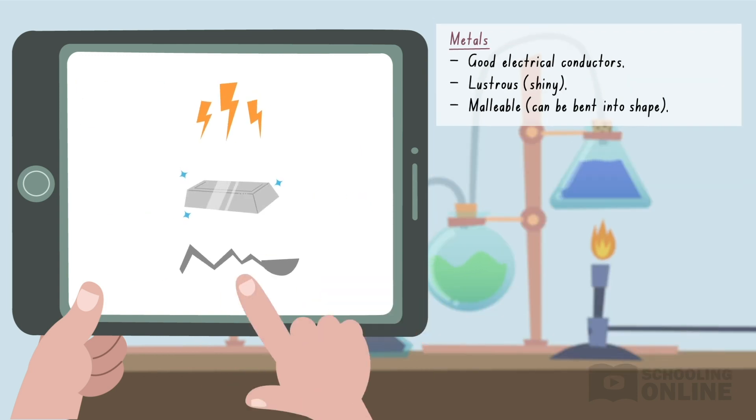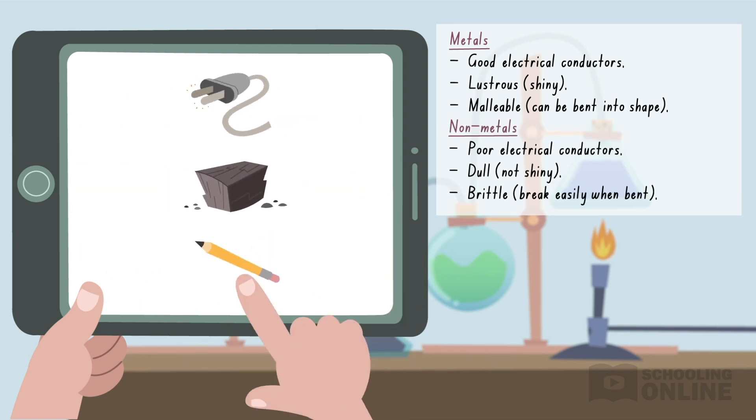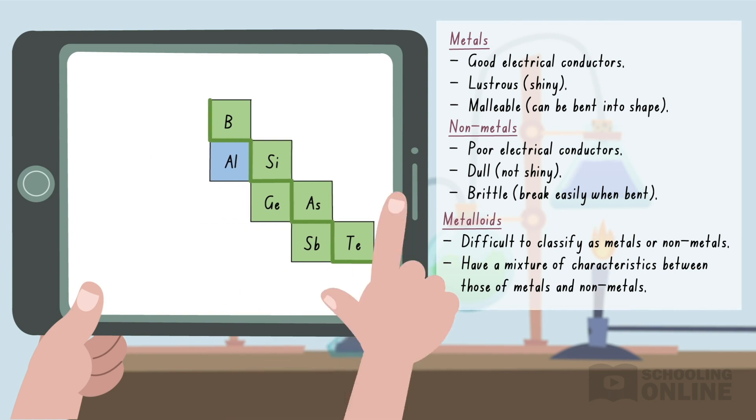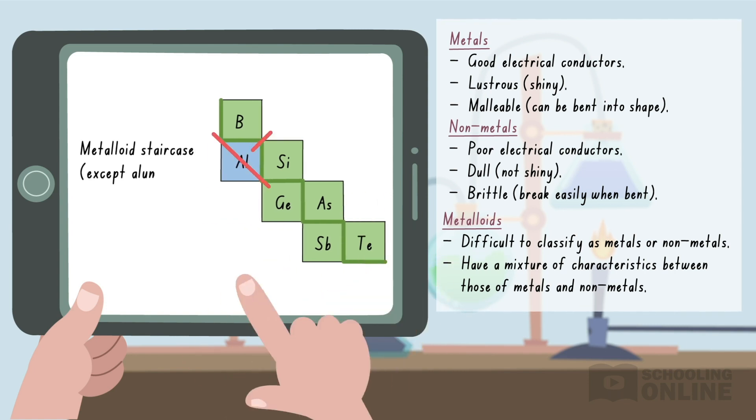Metals form the majority of the elements in the periodic table. In general, they are good electrical conductors, lustrous and malleable. Non-metals appear on the far right-hand side of the periodic table. Usually, they are poor electrical conductors, dull and brittle. Metalloids form a diagonal in the periodic table. They have a mixture of characteristics, between those of metals and non-metals, which makes them difficult to classify. When using the staircase method, remember that aluminium is a metal.